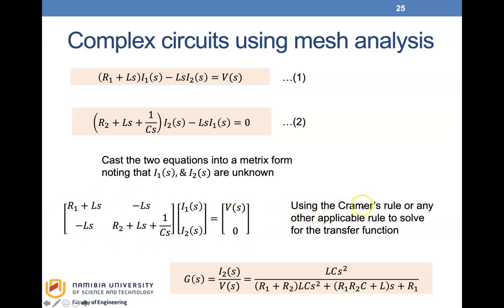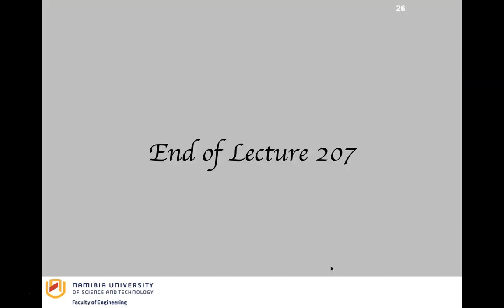With the matrix equation in place, we apply Cramer's rule to solve for I2(s)/V(s), which is our transfer function. The denominator is the determinant of the matrix — (R1+Ls)(R2+Ls+1/Cs) minus (−Ls)(−Ls) — giving the final transfer function. This concludes lecture 207. Next, we will look at how to combine mechanical and electrical systems to develop an electromechanical system. Thank you.